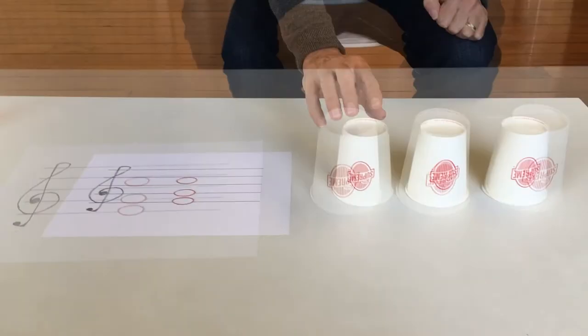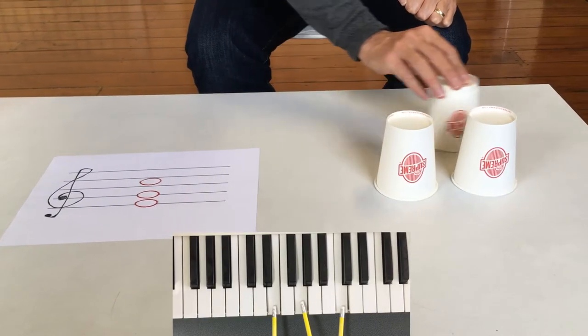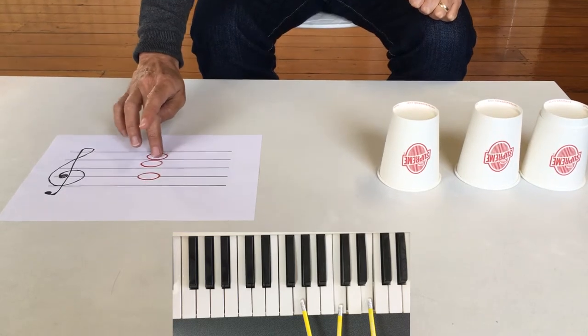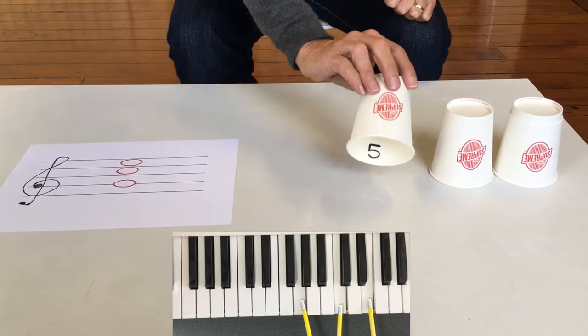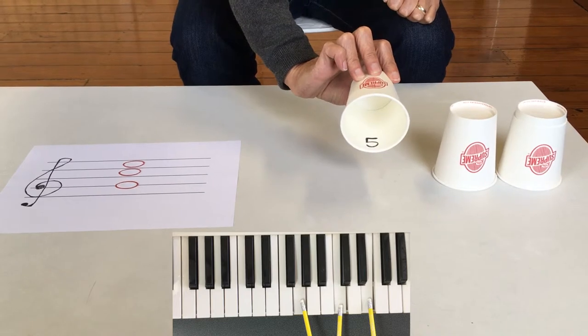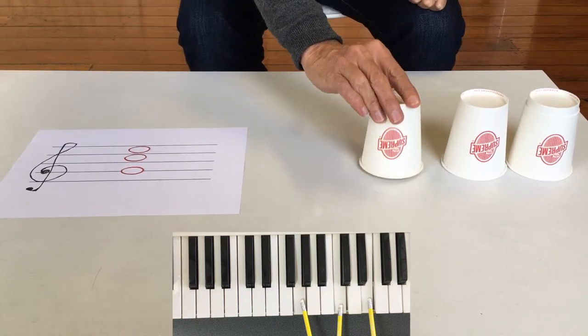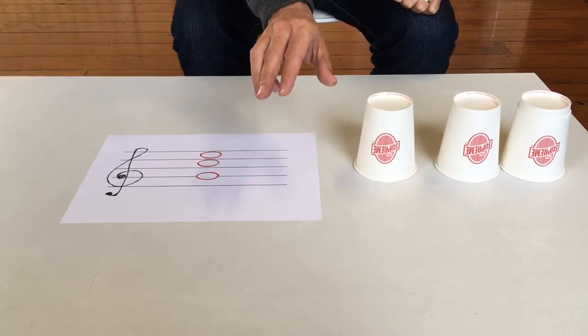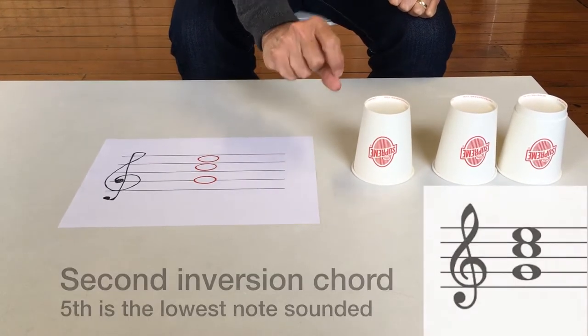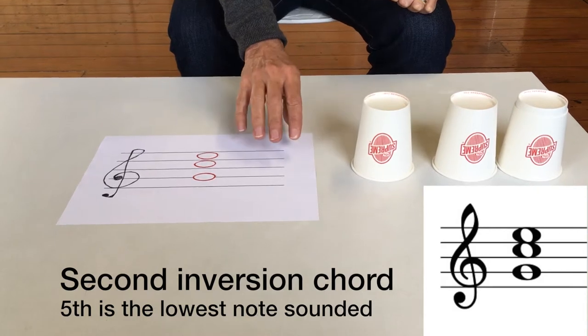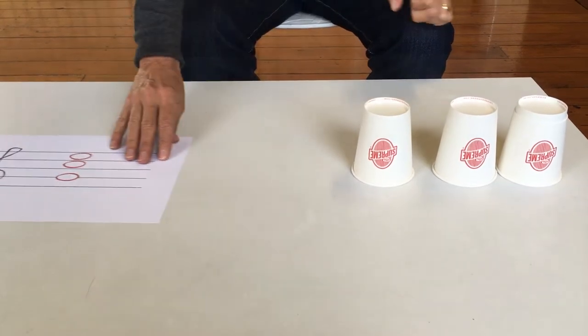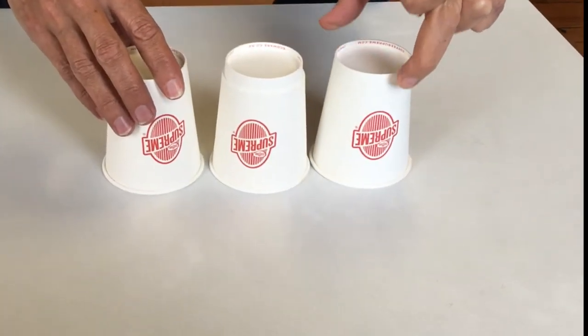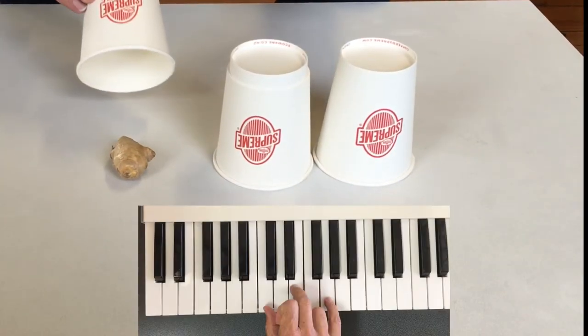But wait, there's more. If I move the third, we now have the fifth as the lowest note. This is called a second inversion.